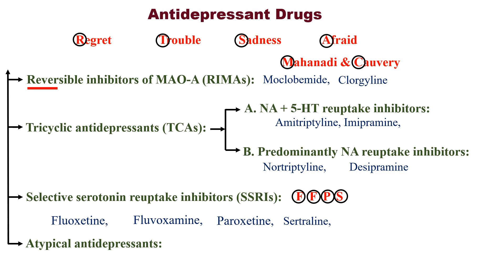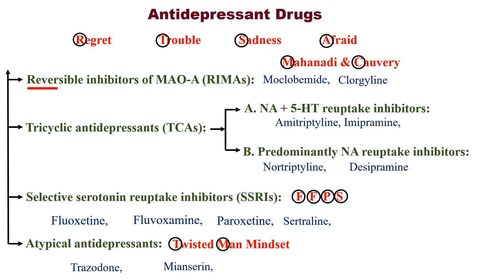Finally, the last category of antidepressant drugs is atypical antidepressants. Atypical means unusual, or not normal. Just think of atypical as a twisted mindset which is not normal — remember 'twisted man mindset' when you see atypical antidepressants. Here, T is for trazodone, M for mianserin, and again M for mirtazapine.